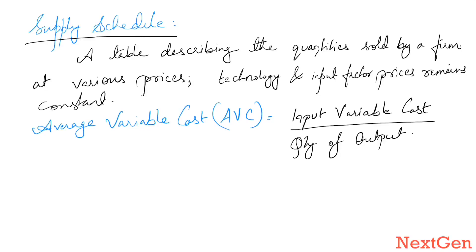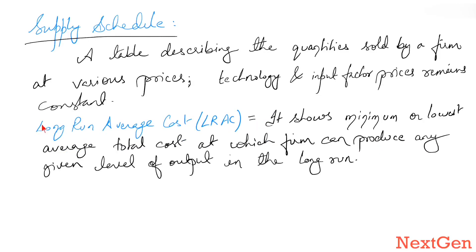Average variable cost (AVC) is the total variable cost divided by the quantity of output produced by the firm. The long run average cost (LRAC) shows the minimum or lowest average total cost at which a firm can produce any given level of output in the long run.